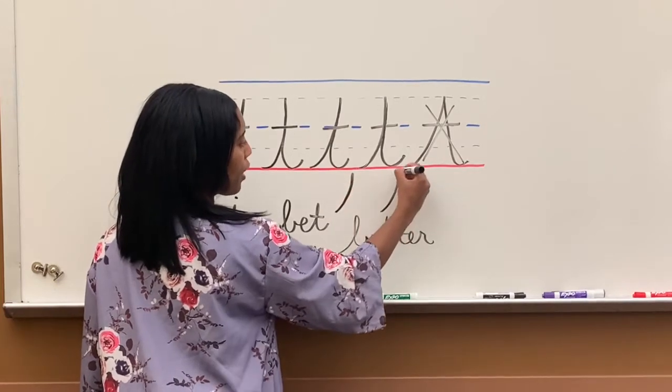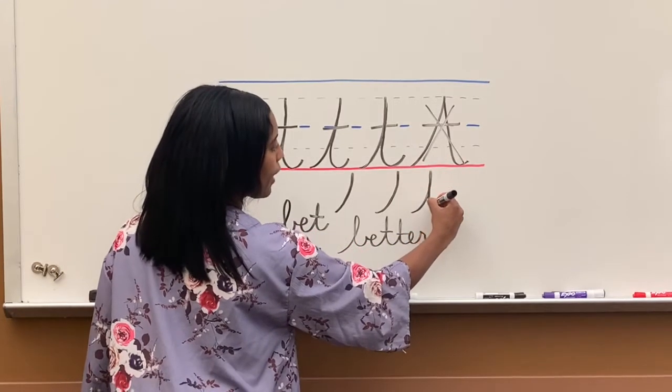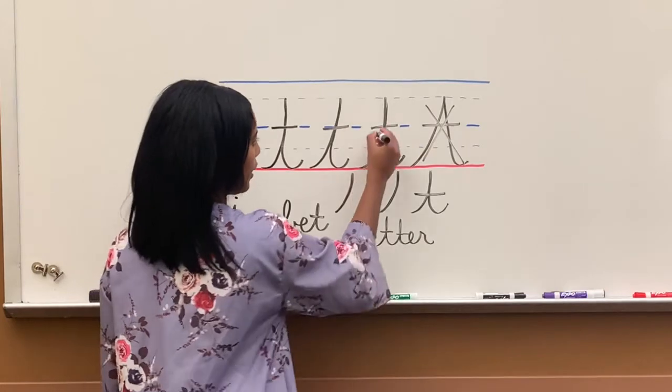Don't follow the line all the way down. Whenever you go up, come straight down the same line, and then it splits on its own. And then you cross your T last.